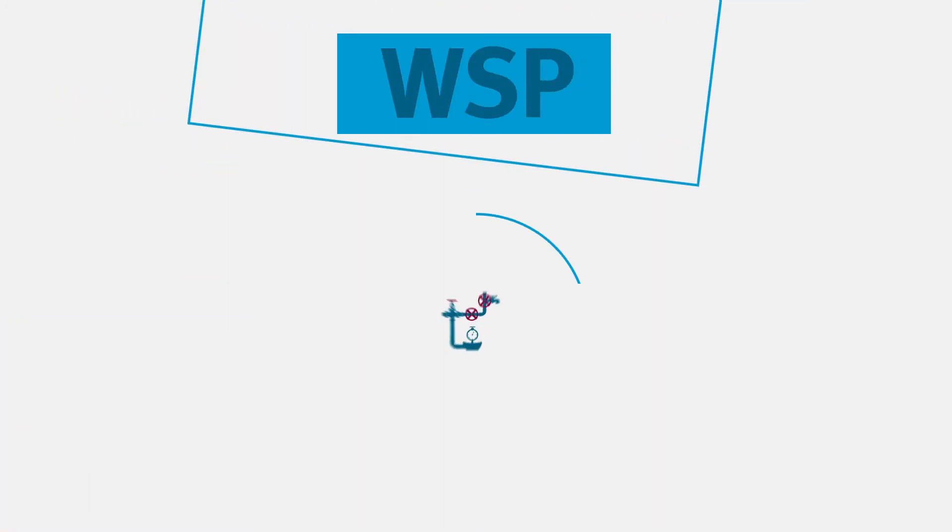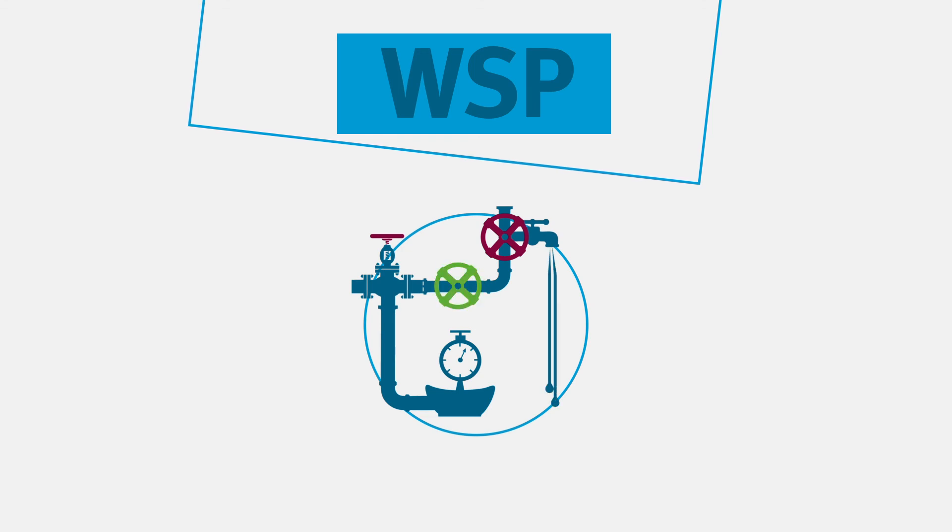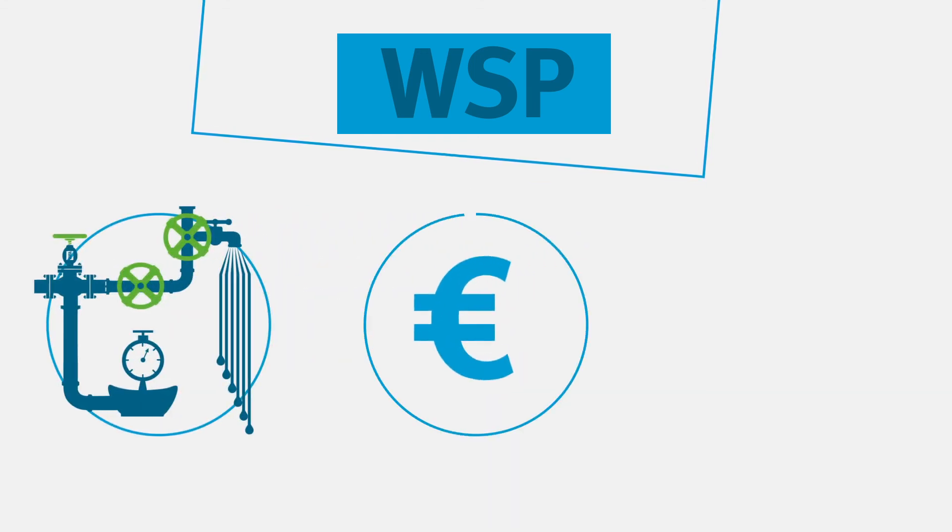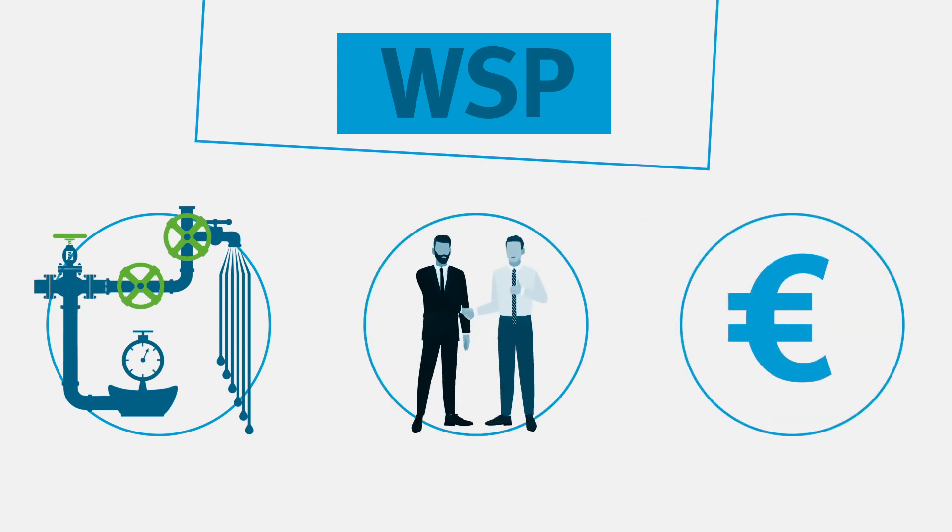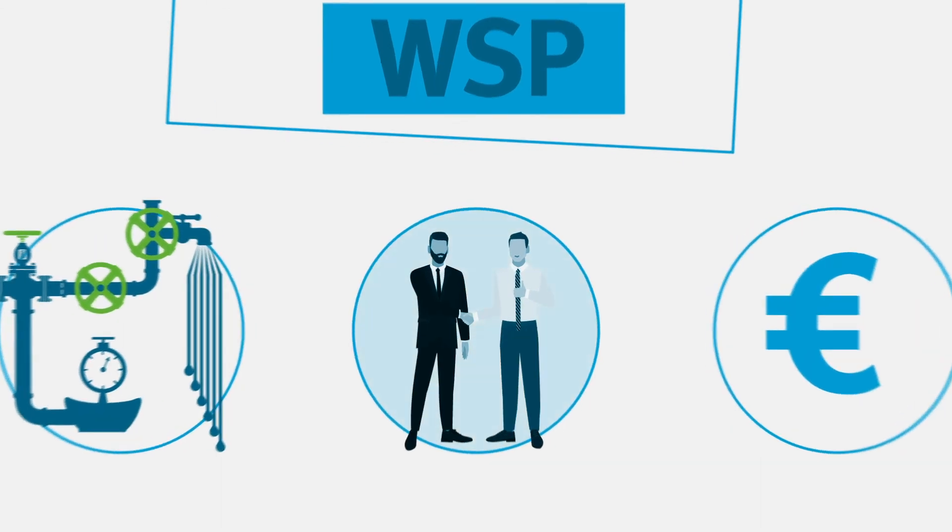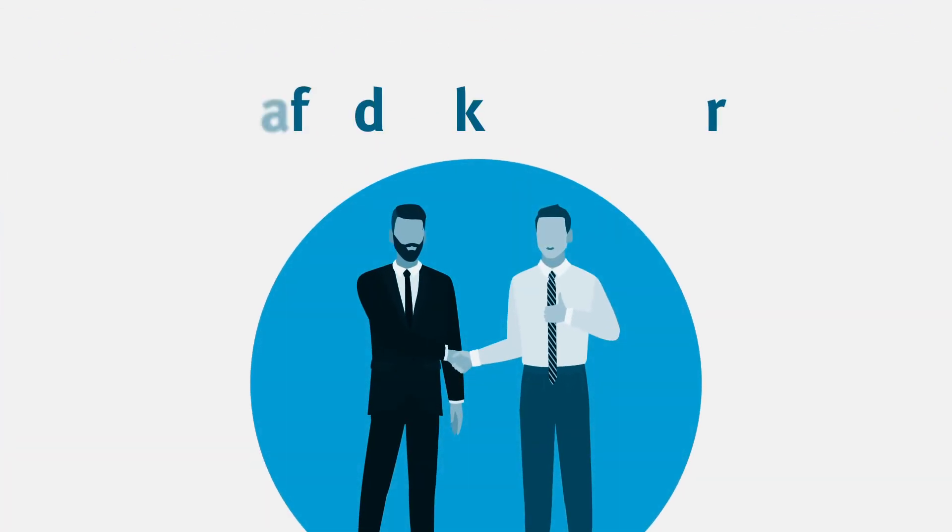A successfully implemented water safety plan uncovers and addresses the vulnerabilities in the water supply system, provides information for necessary investments, and promotes cooperation between water suppliers and authorities. Because the common goal is safe drinking water for consumers.